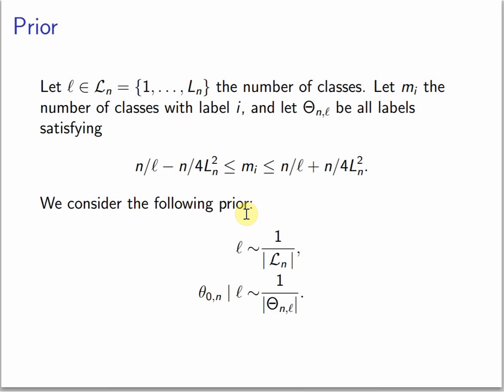Let L be the number of classes which is upper bounded by this capital LN, and MI the number of classes with label I. We require that the number of elements in one class is approximately n over L. We consider the following prior: we first put a prior on all possible number of classes, and then given the number of classes, a uniform prior on all allowed labels.